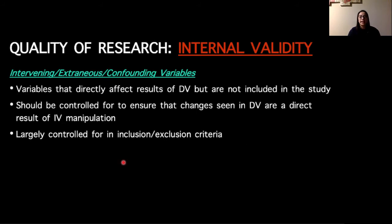Another threat to internal validity is what we call intervening variables. These could also be called extraneous variables, or confounding variables, or confounders. These are variables that directly affect the results of the dependent variable that is measured, but they're not actually accounted for in the study. Usually these are going to be controlled with your inclusion and exclusion criteria when you're collecting your sample, but they can also be things that need to be considered in the actual design of your study. But they should be controlled for, that way you're not adding in different variables that are impacting the measurements you're collecting.